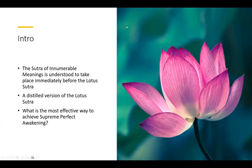This Sutra is often understood to take place immediately before the Lotus Sutra. One reason for this is that the introduction to the Lotus Sutra mentions that Shakyamuni Buddha enters the Samadhi of Enumerable Meanings, and so later this Sutra was written and people said, ah, that's what it was talking about. It fills in a gap before the main content of the Lotus Sutra, and also serves as a Cliff Notes version — a distillation of the ideas of at least the first half of the Sutra, though based on what we talk about tonight, you might be able to see the whole Sutra in there.